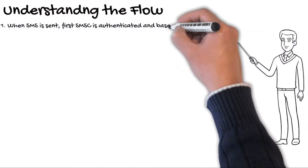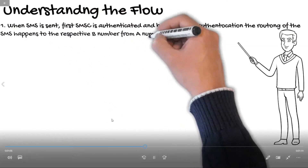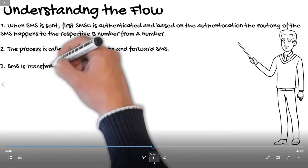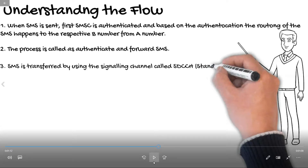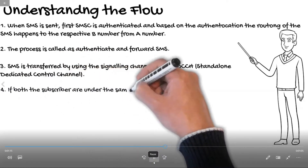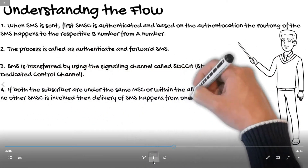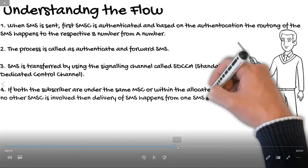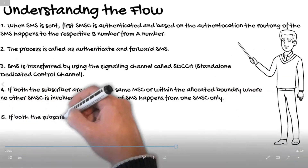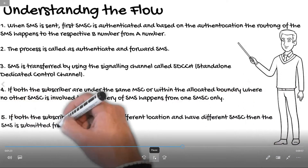Now let us see how exactly the flow happens. Whenever an SMS is sent, the SMSC authenticates it, and based on the authentication, routing of the SMS happens from A number to the respective B number. This process is called authentication and forward SMS, known as MO-FSM. SMS is transferred using the signaling channel called SDCCH — Standalone Dedicated Control Channel. If both subscribers are under the same MSC, the message flows within the same MSC and the same SMSC.